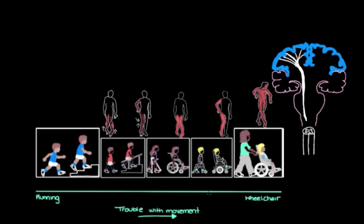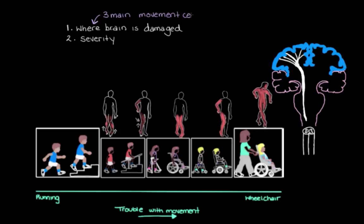Someone with cerebral palsy can fall anywhere on a wide spectrum of movement impairments. What dictates where they end up on this spectrum largely depends on where their brain is damaged or impaired and how severe that damage is. There are three main brain regions — movement centers and their associated neuron tracks — that can be damaged, and which one is primarily affected gives rise to the different types of cerebral palsy.